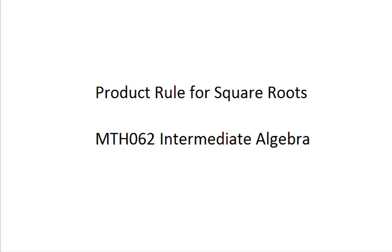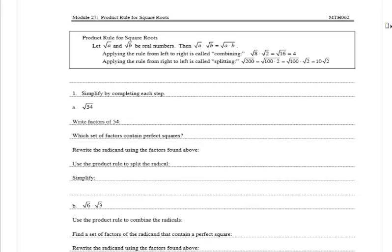In this video, we're going to take a look at the product rule for square roots. The product rule says: let the square root of a and the square root of b be real numbers. Then the square root of a times the square root of b is equal to the square root of a times b.